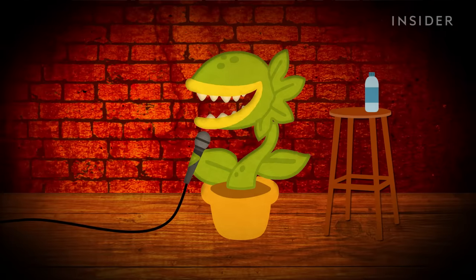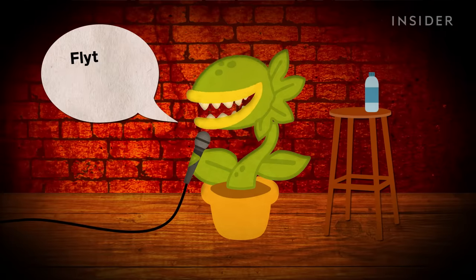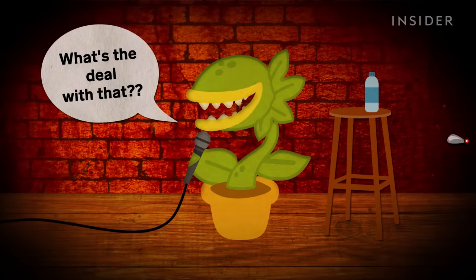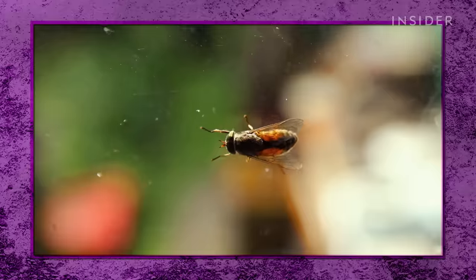Funny thing about Venus flytraps, they don't usually trap flies. In fact, winged insects only make up about 5% of their diet. We really ought to be calling it the Carolinas spider trap because it's only found in the Carolinas, actually a little piece of the Carolinas. And it mostly eats spiders and ants. But regardless of species,